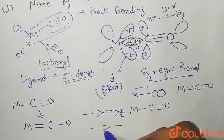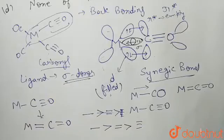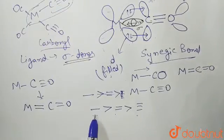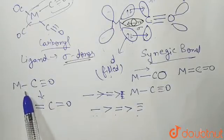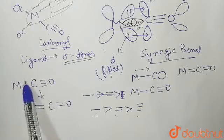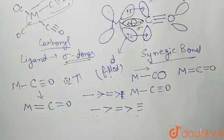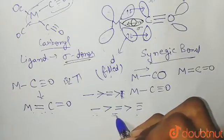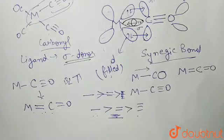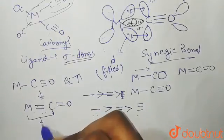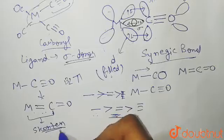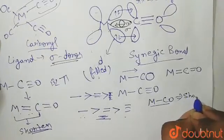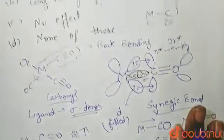The M-C bond is converting from a single bond character to a double bond character, giving M=C=O. We know that single bond length is greater than double bond length. When there was no synergistic back bonding, the M-C bond length was higher. Because of the synergic bonding, the M-C bond acquires double bond character, so the bond length becomes shorter — the M-CO bond shortens.